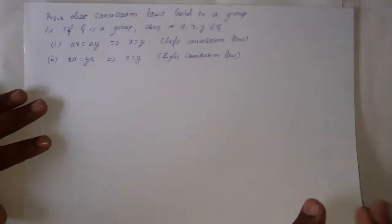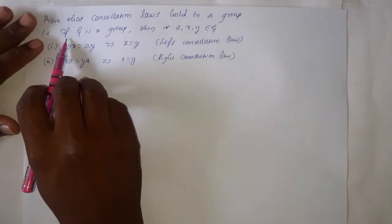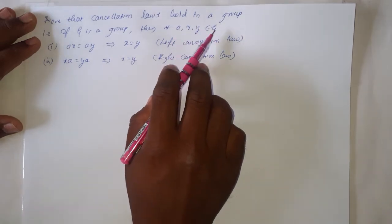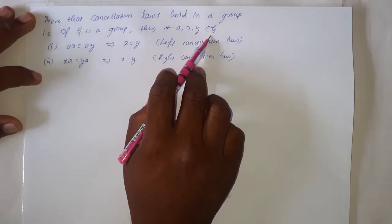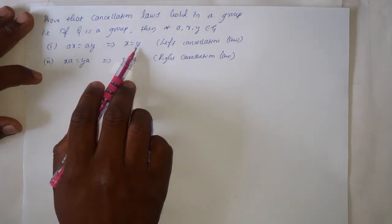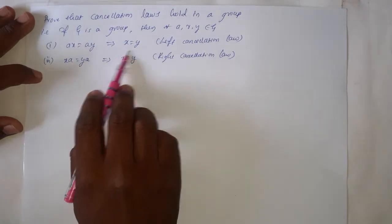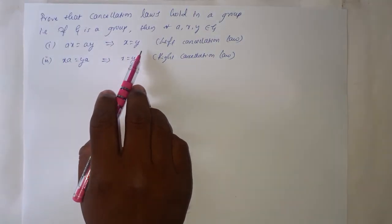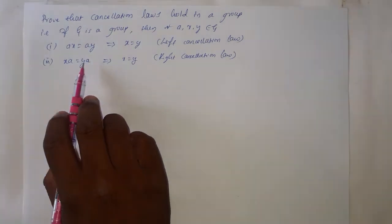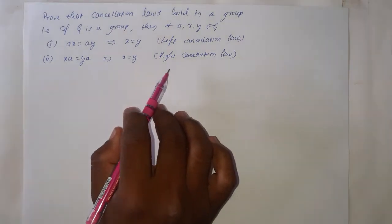The first property is: prove that cancellation laws hold in a group. That is, if G is a group, then for all A, X, Y — these are three elements of group G — then AX equal to AY implies X equal to Y. Here A and A will get cancelled, leaving X equal to Y. This is the left cancellation law. Similarly, XA equal to YA implies X equal to Y — this is the right cancellation law.